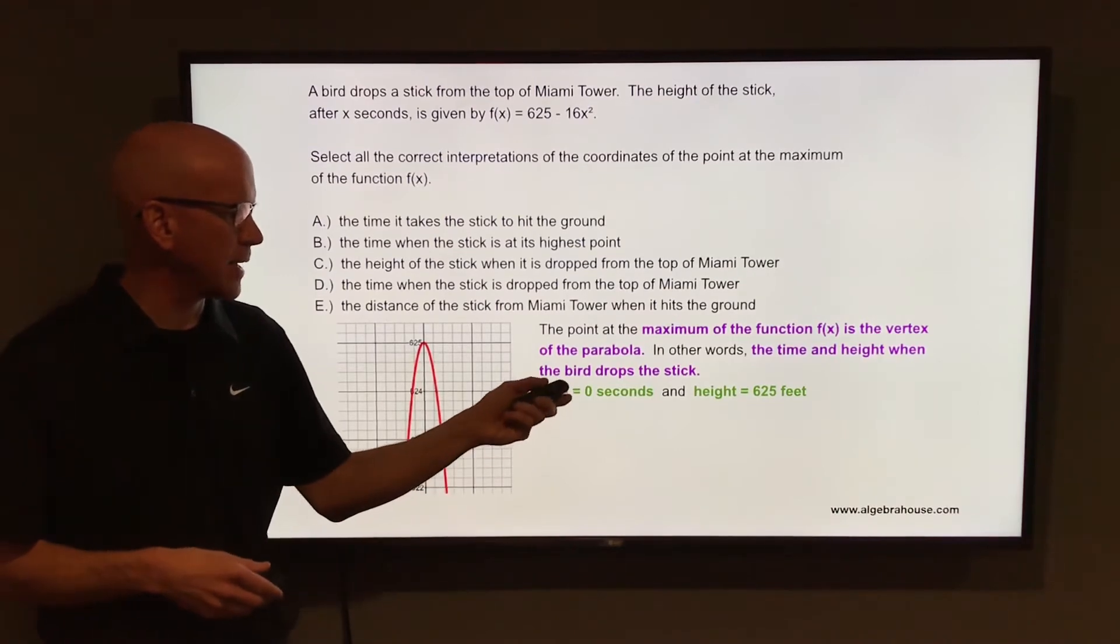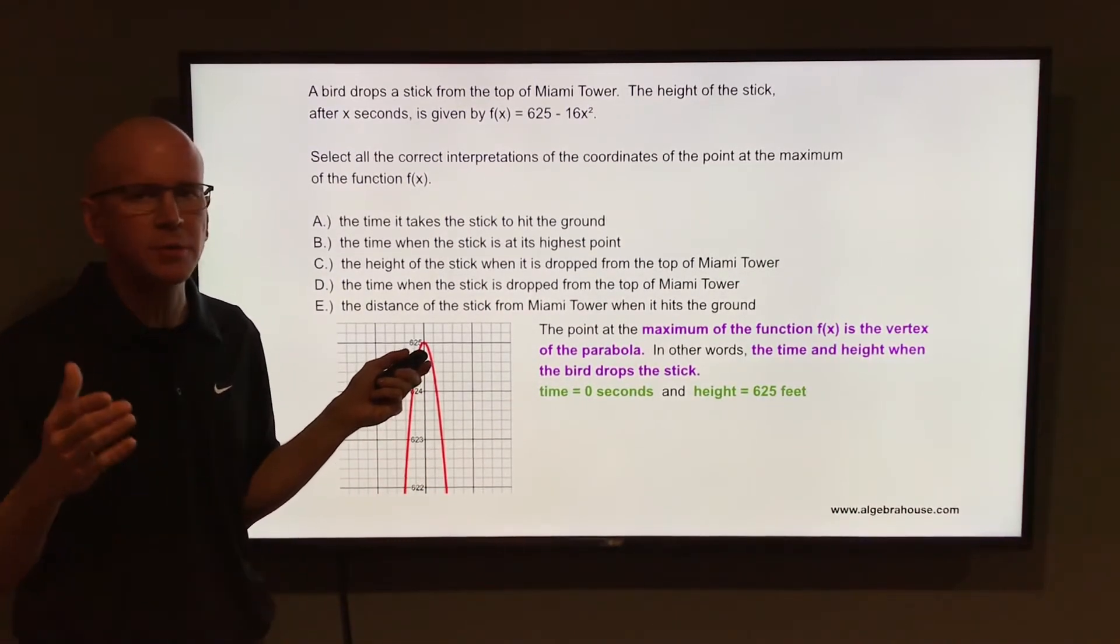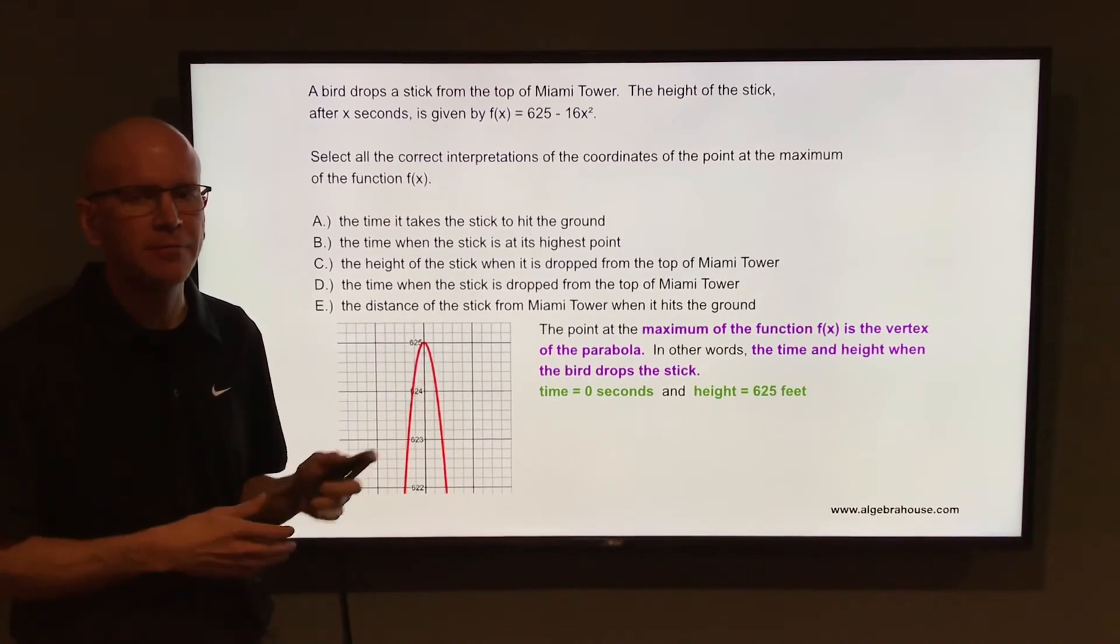In other words, the time and the height when the bird drops the stick. So at that vertex the coordinates are 0, 625. x is 0, that's 0 seconds, and y is 625, that's 625 feet.